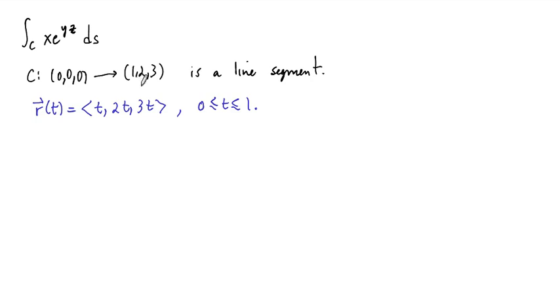Now, one thing that you have to be careful of is that whatever your parametrization is, it has to have the direction, the orientation that takes you from the origin out to the point 1, 2, 3. That's the only thing that you should be really, really careful to check.